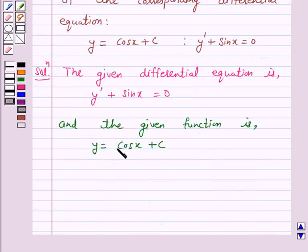Now we have to verify that the given function, y = cos x + c, is the solution of the given differential equation y' + sin x = 0. As before, we will find the first derivative of this function and substitute in the given differential equation to see whether it is satisfied or not.